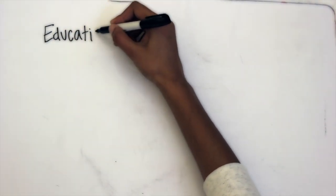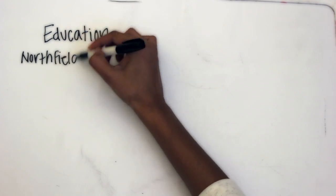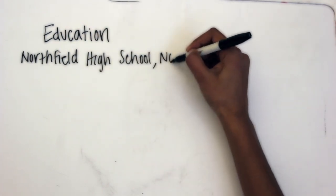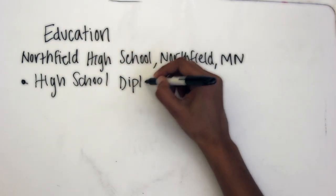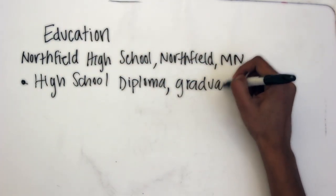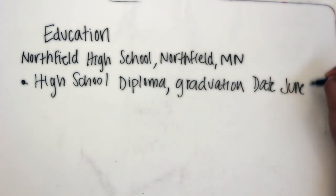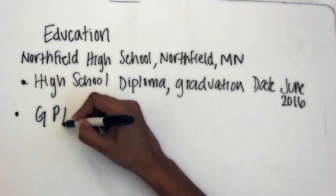Start with your education. Include all of your education, including your high school and college. List the year you graduate and what high school you went to. Also include your GPA if it's above a 3.0.